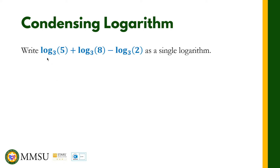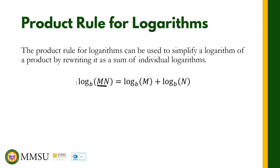First, we are going to combine these two expressions by using the product rule. The logarithm of 5 in base 3 plus the logarithm of 8 in base 3 — remember the product rule states that the logarithm of m·n in base b is equal to the logarithm of m in base b plus the logarithm of n in base b. So we can combine the two expressions by copying the logarithm in base b and multiplying m and n together.